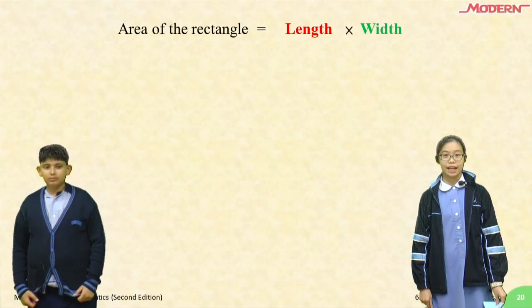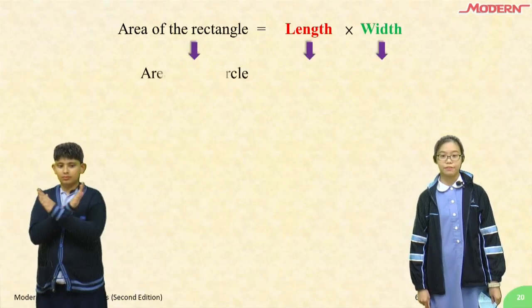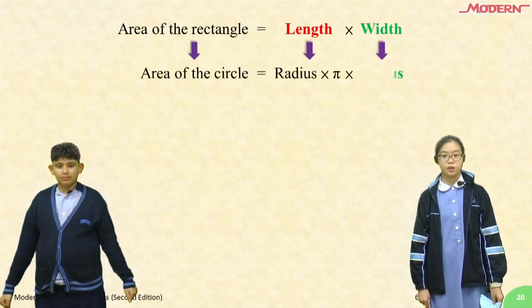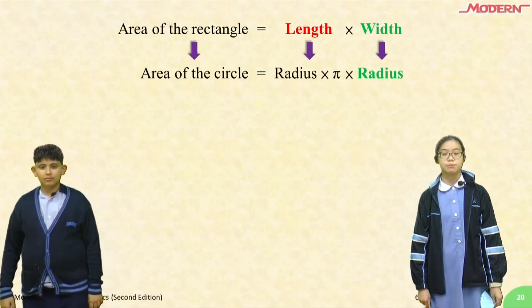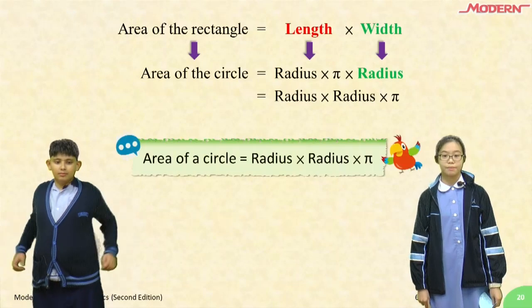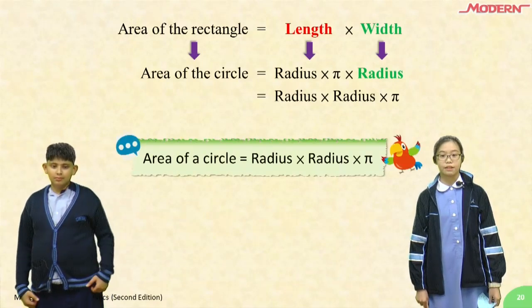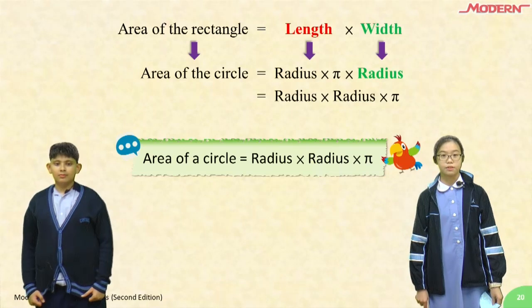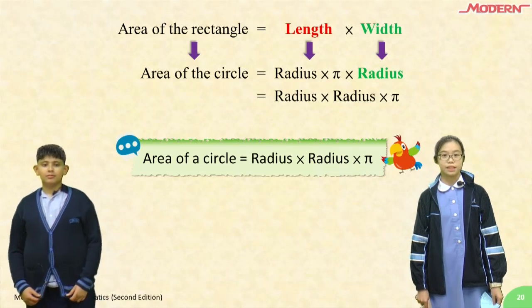Area of the rectangle is length times width. Area of the circle is radius times pi times radius. Equals radius times radius times pi. So the formula for calculating the area of a circle is radius times radius times pi.